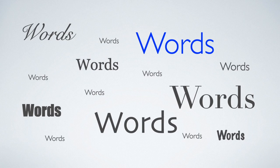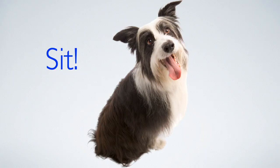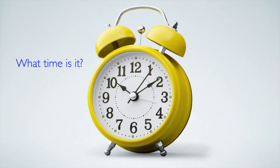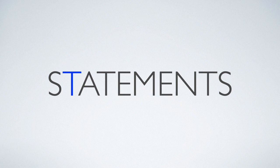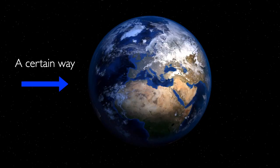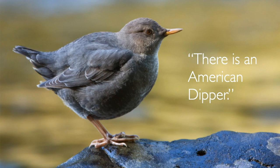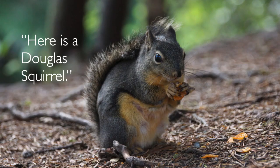We do lots of things with words. We exclaim, give commands, and ask questions. One of the most important things we do with words is make statements. When you put forward a statement, you say that the world is a certain way. For instance, there is an American dipper, or here is a Douglas squirrel. You're describing the way things are.